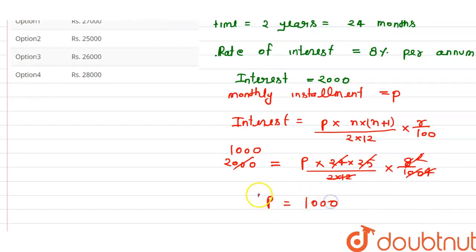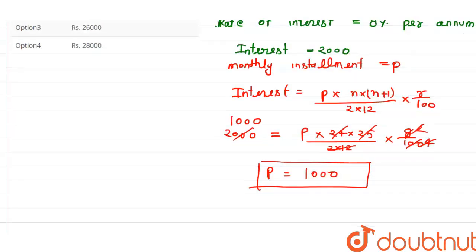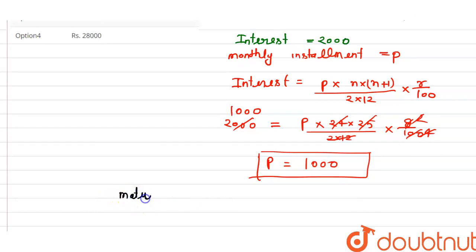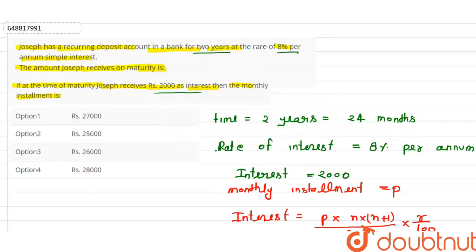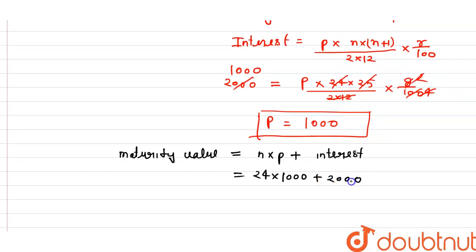Now we find the maturity value. The formula for maturity value is: Maturity Value = n × P + Interest. Substituting: n is 24 months, P is 1000, so 24 × 1000 = 24,000, plus interest of 2000 (given in the question) equals 26,000 rupees. So the maturity value is 26,000 rupees.